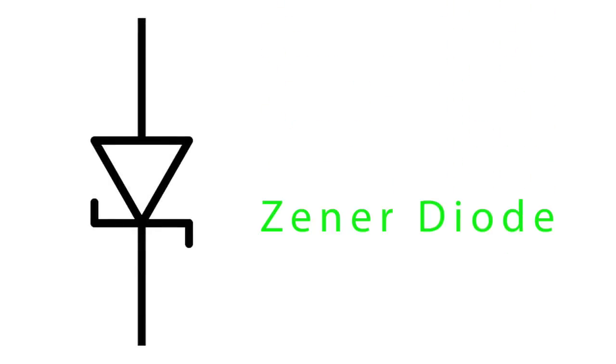There are certain types called Zener diodes, designed to have a specifically low breakdown voltage that can be exceeded safely without damaging the part.